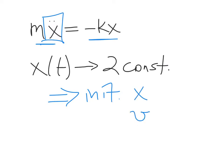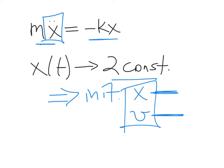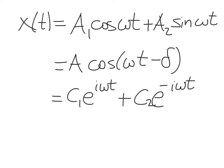These constants will translate into the initial displacement and the initial velocity. In order to solve the problem completely for x as a function of time, we need to know both the initial displacement and the initial velocity, and these two constants will depend on these two initial values. As the book discusses, there are several different ways to write the solution for x as a function of t.